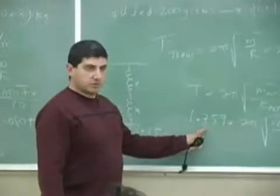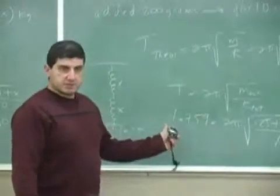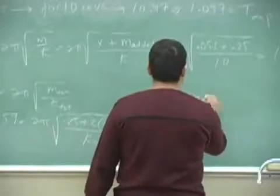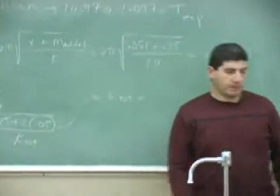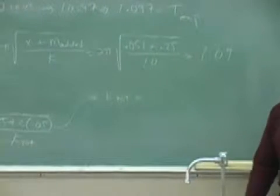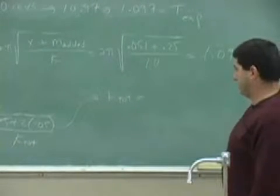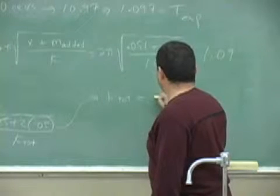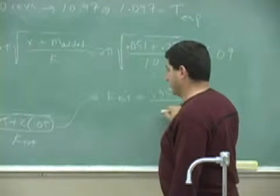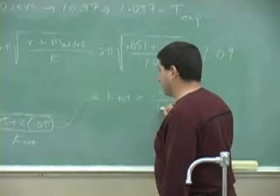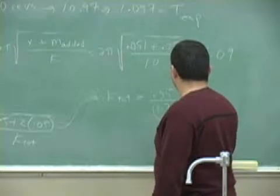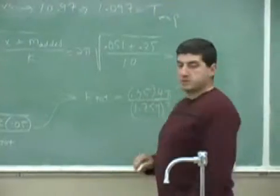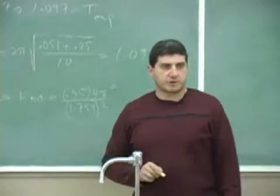So divide that by K total. So the 2 pi goes down there, you square both sides, and then solve for K total. Let's see what we get here. So that's going to be K total is 0.35 divided by 1.759 squared, and then this one squared, 4 pi squared.